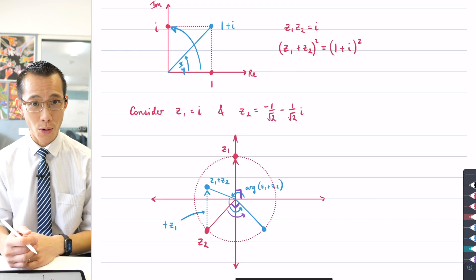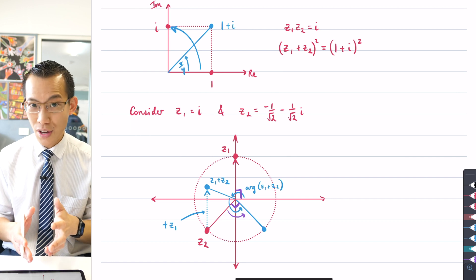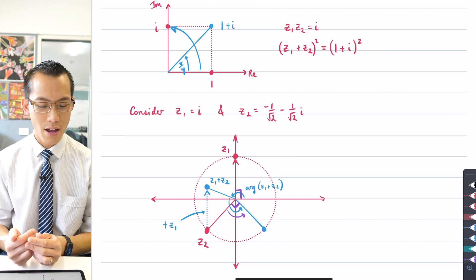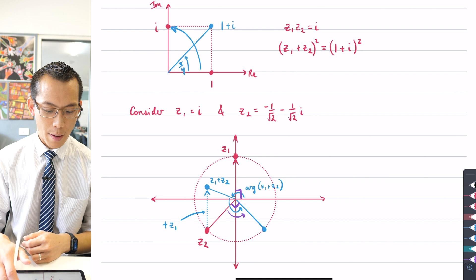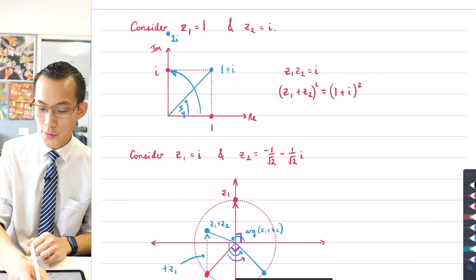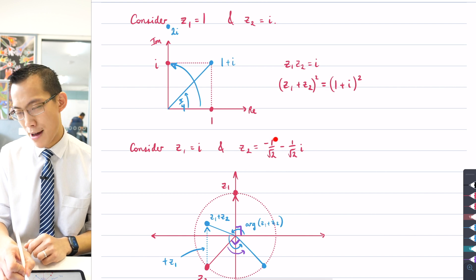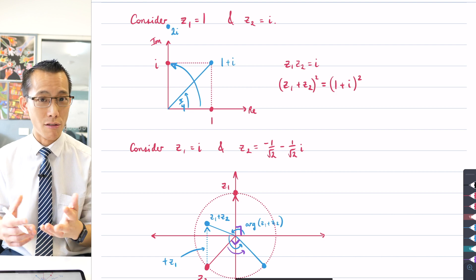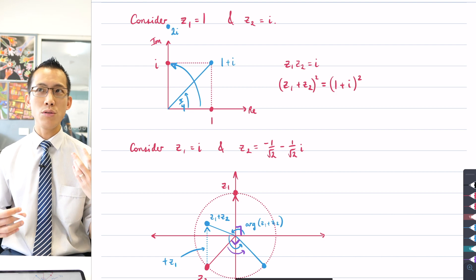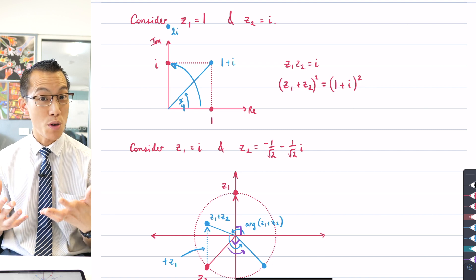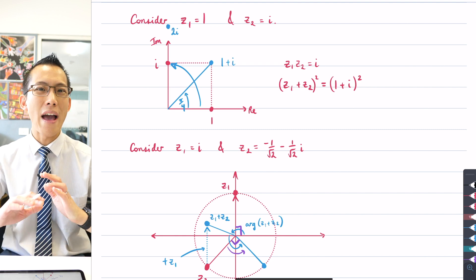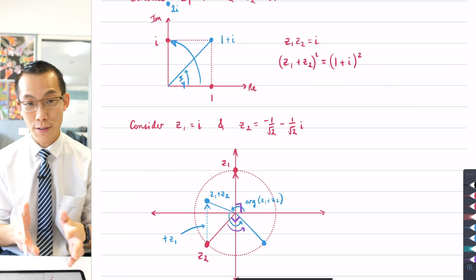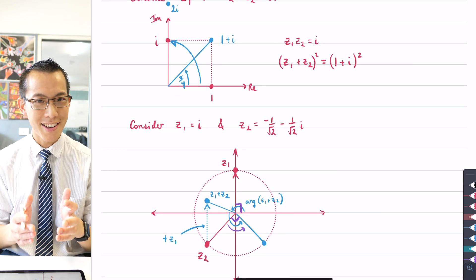Once I realized there was a bisection happening and I could think geometrically, that's when I finally arrived at an actual general solution - not just specific examples. But before I show you that, I want you to hit pause. If you haven't thought about the geometric approach yet, pause the video and think: how would you construct a general diagram and use deductive geometric logic to prove this true for any z1 and z2 sharing the same modulus?